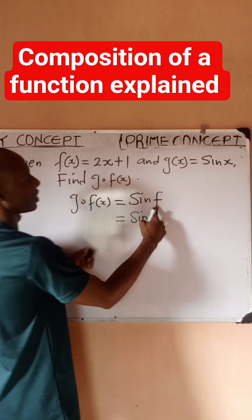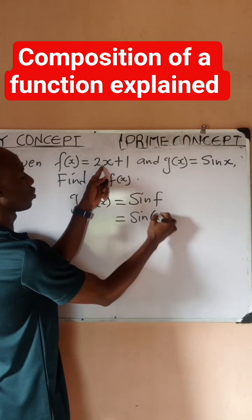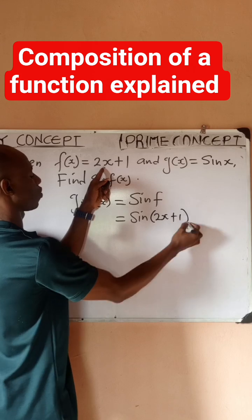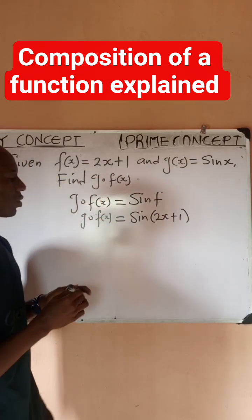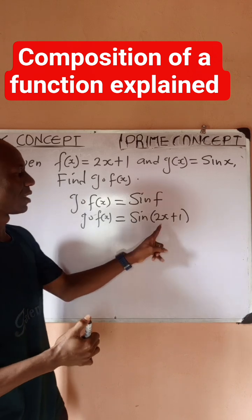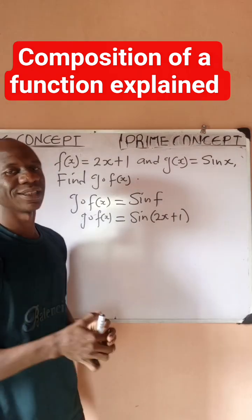I'll then have that this is sine - what is my f? My f is actually 2x+1. So this is actually what we call g∘f(x) or g composition f, which is going to be sin(2x+1).